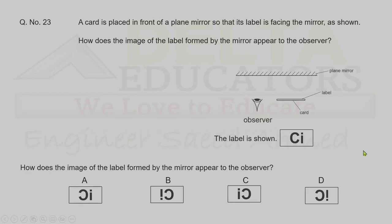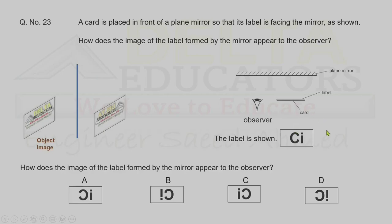Question 23. A card with letters C and I faces a plane mirror. In a plane mirror, the image is virtual and laterally inverted — left becomes right and right becomes left. The C on the left goes to the right and the I on the right goes to the left. Correct option is C.